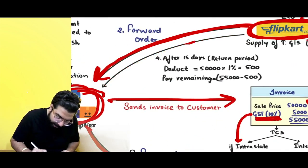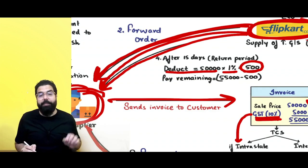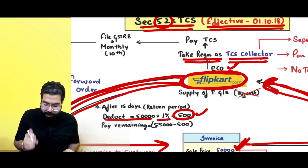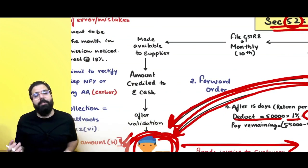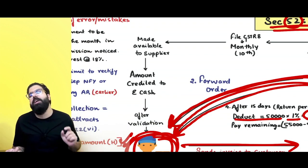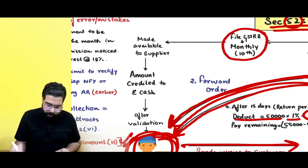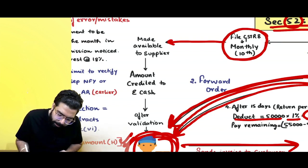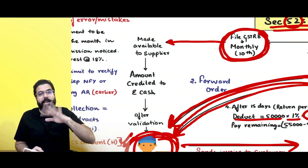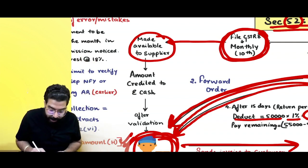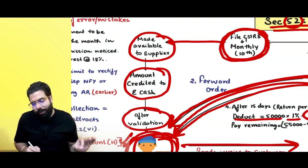Flipkart will deduct 1% on 50,000 rupees — that is 500 rupees — and transfer the remaining amount to the supplier. The supplier will ask where is my 500 rupees. Flipkart will go online and pay the 500 rupees TCS to the government. Flipkart, as the e-commerce operator, will have to file GSTR-8, which is their monthly return/statement. Once they pay 500 rupees and file the monthly statement, the government will give the supplier credit — it will be made available in the supplier's e-cash ledger after validation.